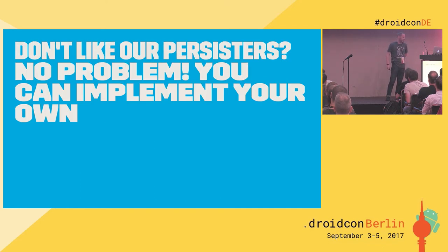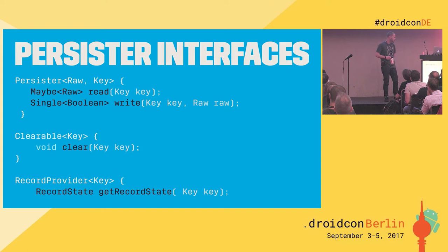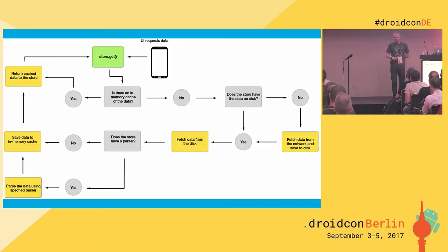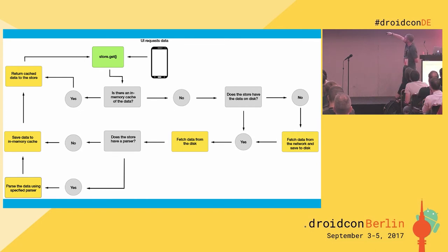If you don't like the built-in persisters, no problem — you can implement your own. It doesn't matter if it's Room, Realm, SQLite, SQLBrite, raw SQL, file system, or shared prefs (though that's a horrible idea). The interfaces to implement for a custom persister are: read, write, clear, and get record state. With a persister in the flow: get → check memory cache → check disk → fetch from network → save → fetch from disk → parse → put in memory → return.